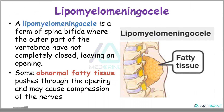The next type of Spina Bifida is Lipomyelomeningocele. A Lipomyelomeningocele is a form of Spina Bifida where the outer part of the vertebrae have not completely closed, leaving an opening. Some abnormal part of the tissues pushes through this opening and may cause a compression of the spinal nerves.